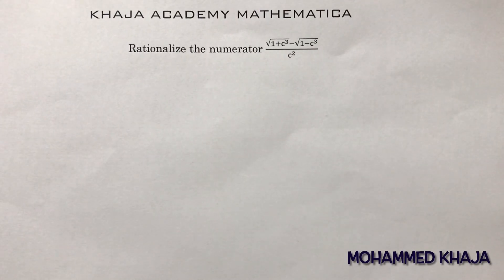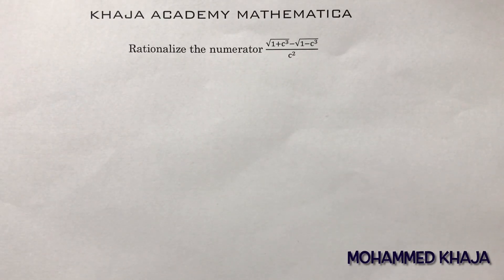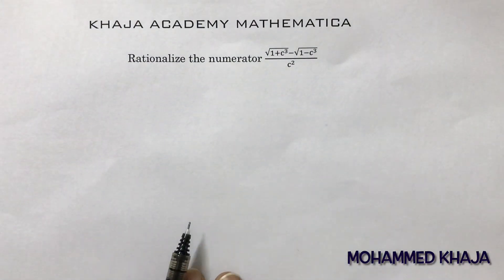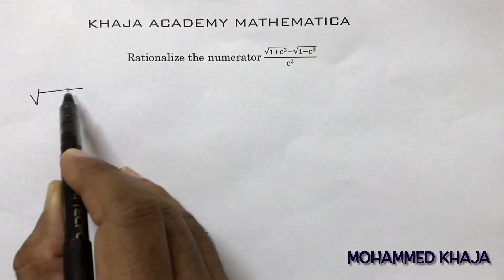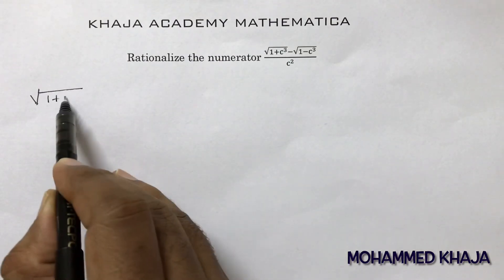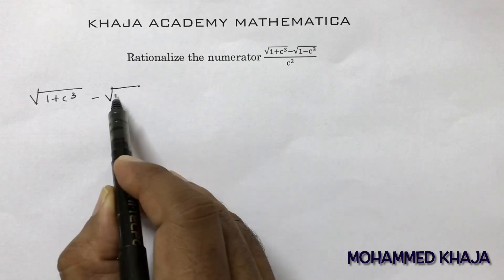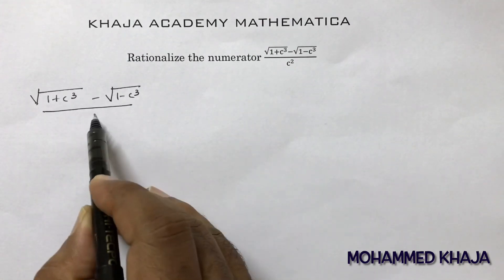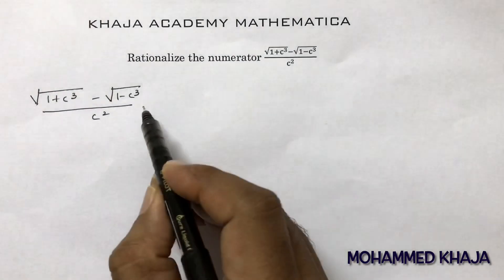This is a Class 9th important problem from number system or real numbers. Here they are asking us to rationalize the numerator. The expression is: root(1 + c³) minus root(1 - c³), all divided by c². In this we need to rationalize the numerator.